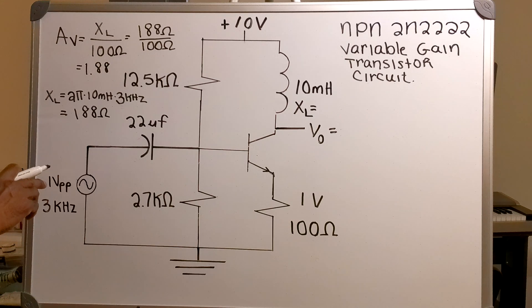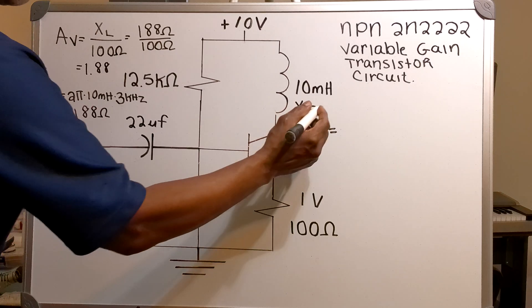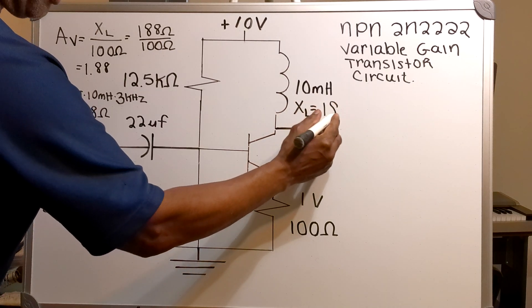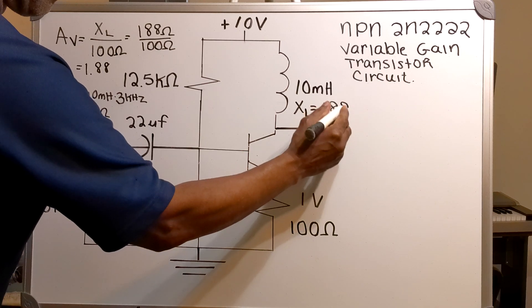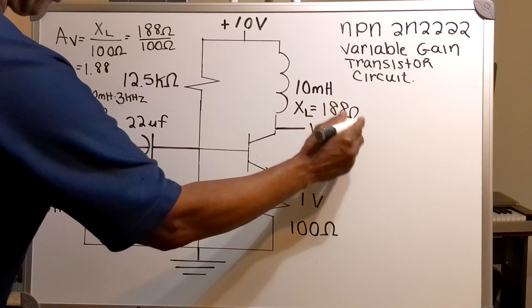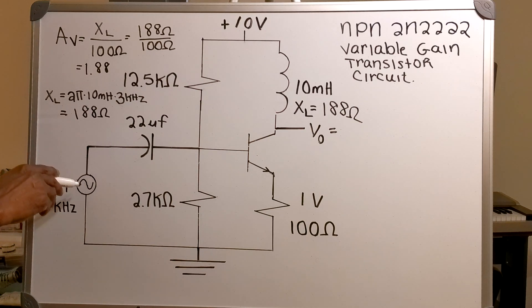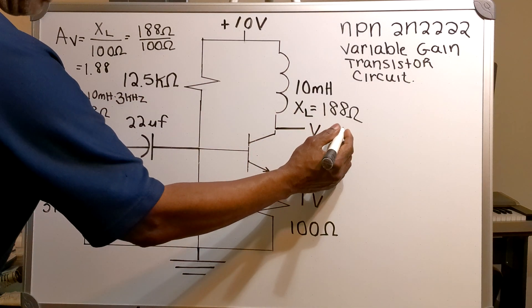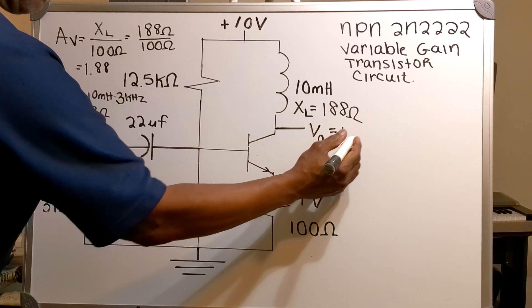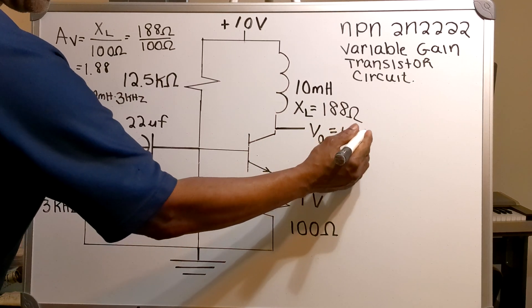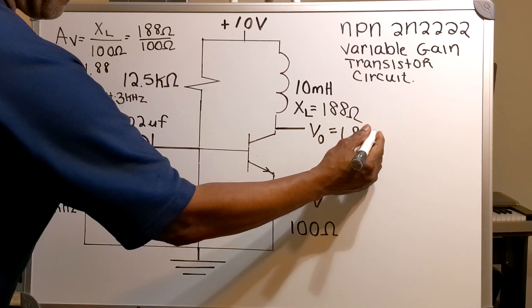So I've got a 3 kilohertz signal. Now my inductive reactance is 188 ohms. I have a voltage gain of 1.88. So I multiply my 1.88 by my 1 volt peak to peak. I will now have an output voltage of 1.88 volts.